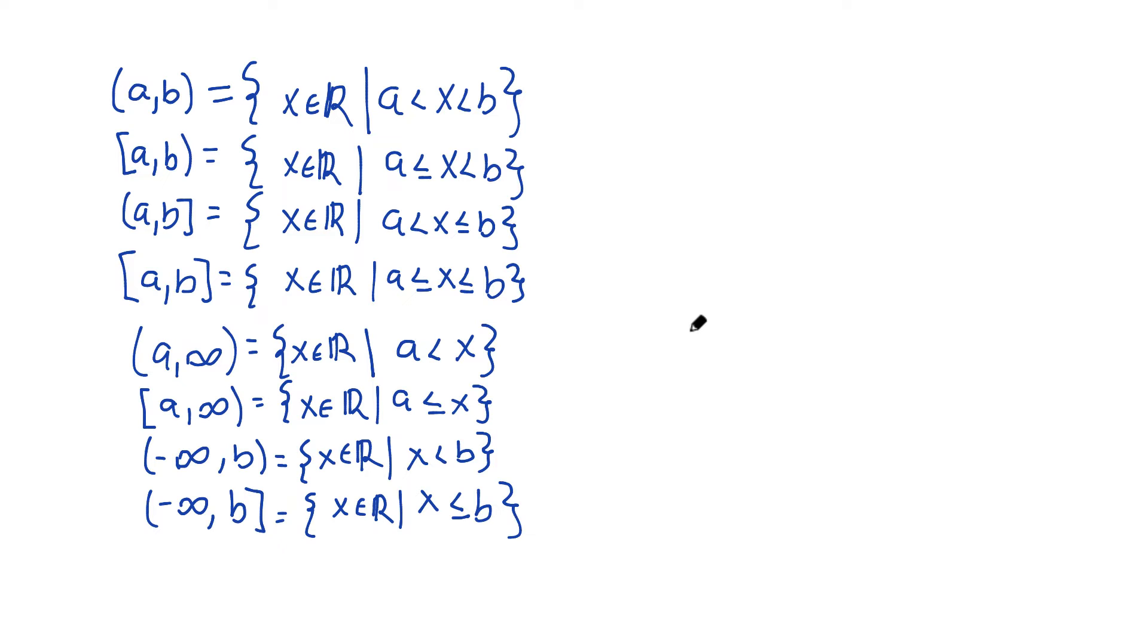That's what an interval is. It's a range or a set of numbers from one to another. If you've never seen this notation before, these curly brackets, this is set notation, or set builder notation. The way we read this is the interval A to B is the same thing as the set of all real numbers X, such that, that's what this vertical bar means, X lives between A and B, or X is greater than A but less than B.